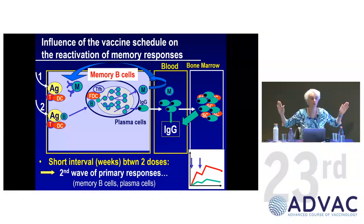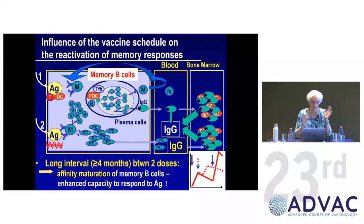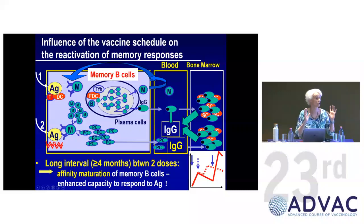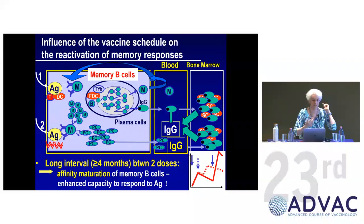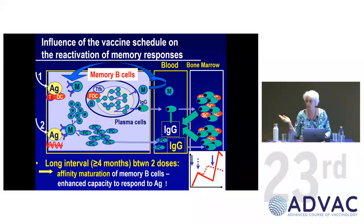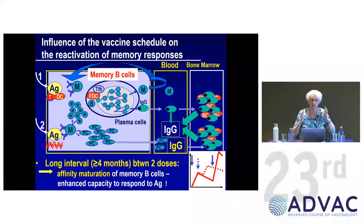But if you wait four months — three to four months is a good average — instead of having only one resting memory B cell you have many that are better equipped and ready. They don't even need to go through the germinal center again because they know exactly what to do, so the response is extremely fast and you generate many more lifelong plasma cells.